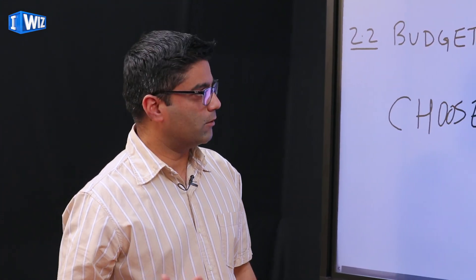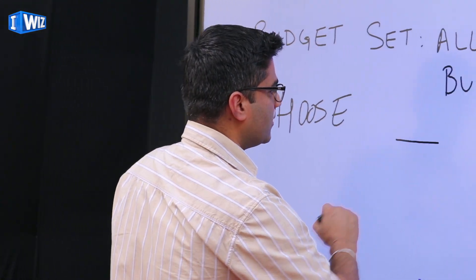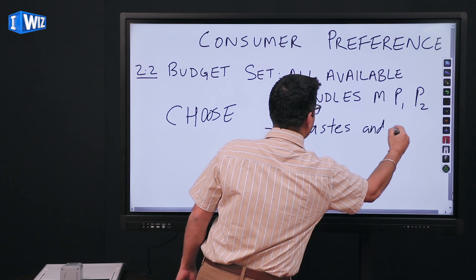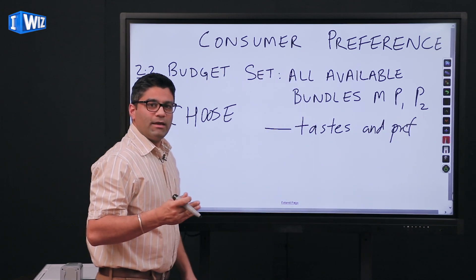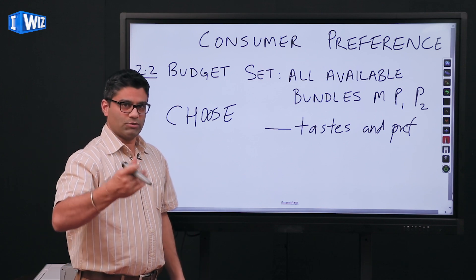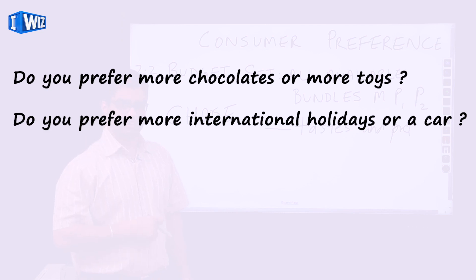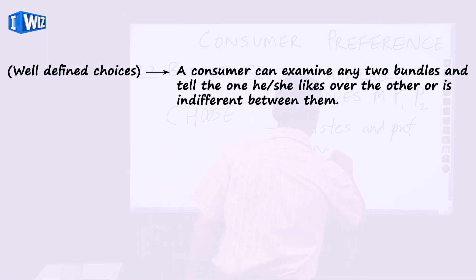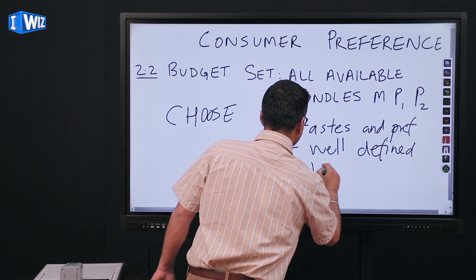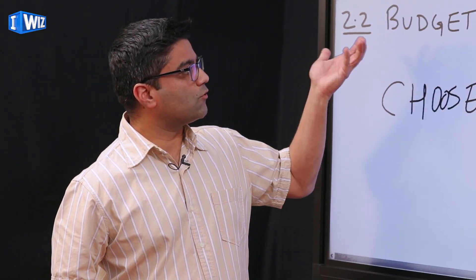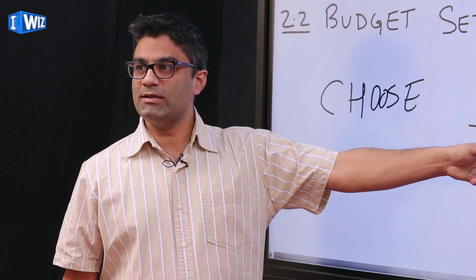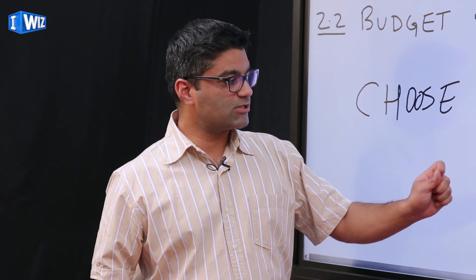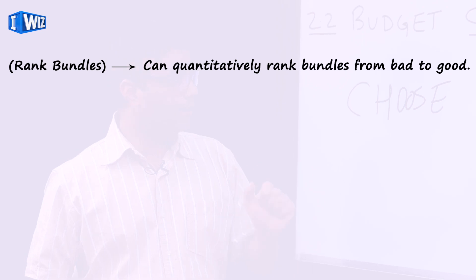There are three things to be careful of when talking about consumer preferences. First, we need to have tastes and preferences that are well-defined — we need to be very clear whether I prefer one good over another. For example, I might prefer clothes over chocolates while you might prefer toys over chocolates. Second, the bundles (x1, x2) have to be very well defined — I need to know exactly how many units of each good are in a bundle. Third, we need to be able to rank them in a quantitative manner.